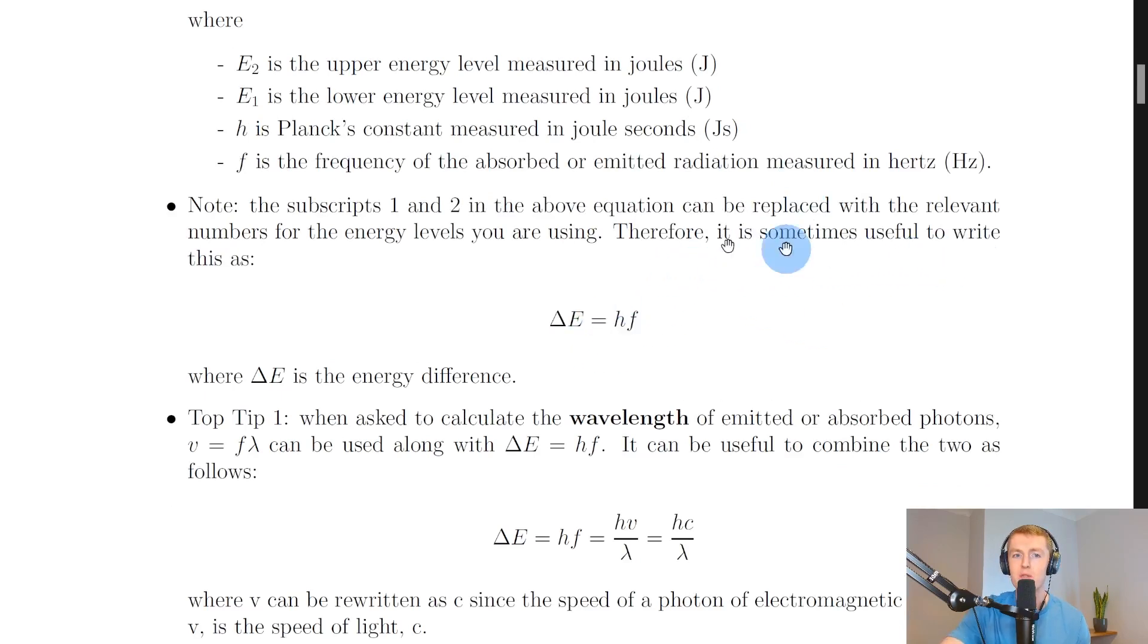Therefore it is sometimes useful to write this as delta E equals hf where delta E is the energy difference. So instead of writing E2 minus E1 or putting in the subscripts for the specific energy levels you can just write delta E instead meaning the energy difference or change in energy.